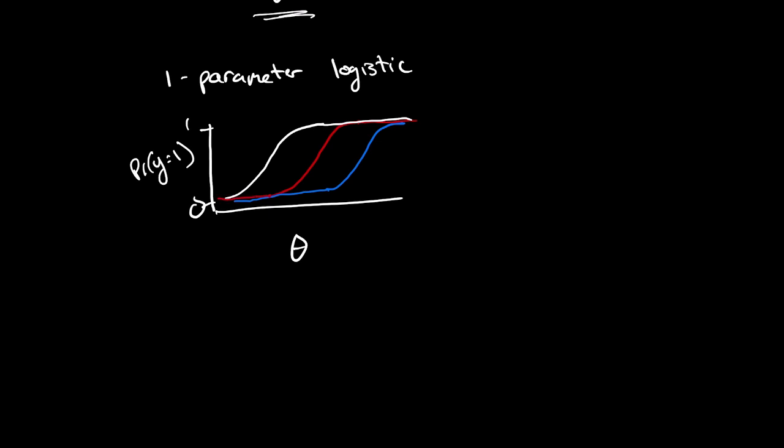What this implies is that the one parameter logistic only differs with respect to what is called the location parameter, the location of each item characteristic curve. The functional form of a one parameter logistic contains one parameter other than theta, and that is the probability that y equals one given theta, which we'll call beta.